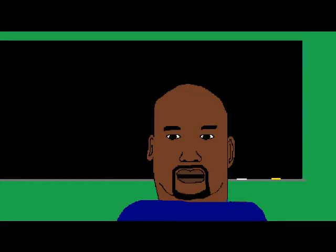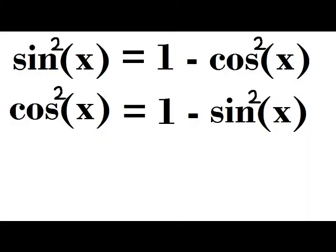To do trigonometric integrals, you need to know the following identities. That sine squared equals 1 minus cosine squared. That cosine squared equals 1 minus sine squared.